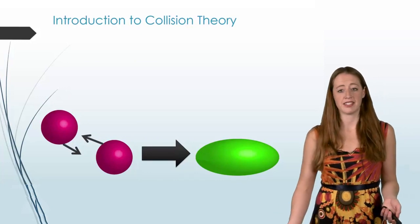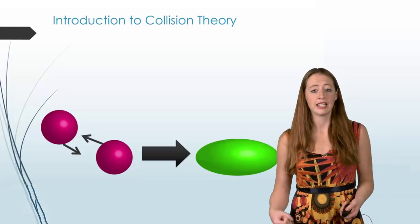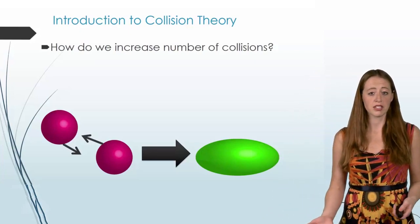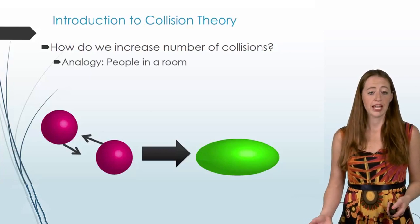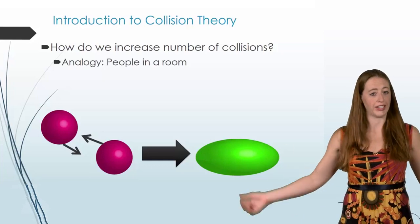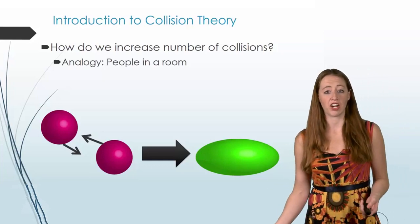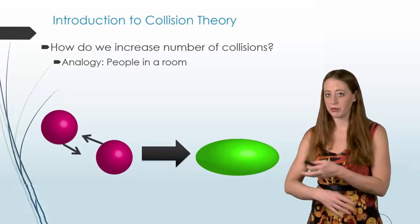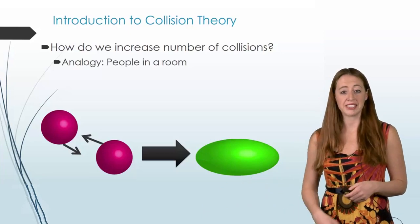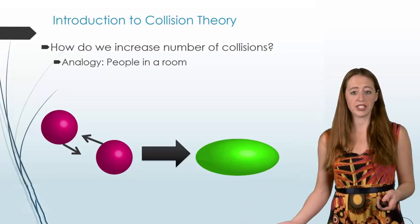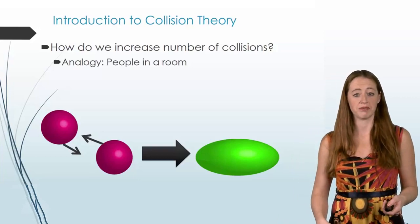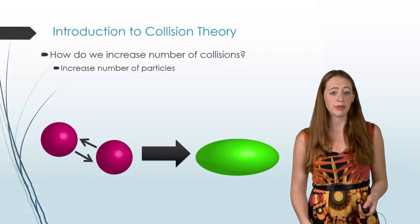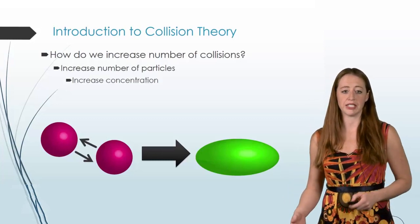So we want to think about how we can increase the number of collisions — in other words, what's going to make it more likely that a reaction proceeds faster. A good analogy is to think about people in a room. If you have two people in a very large lecture hall, they're not going to collide very often. But if we put 300 people in and tell them to walk around, they'll be colliding all over the place. And with 700 people, it's going to be constant collisions. This is a good analogy for what happens as we change concentration — increasing the number of particles in a given area, or in other words, increasing concentration.